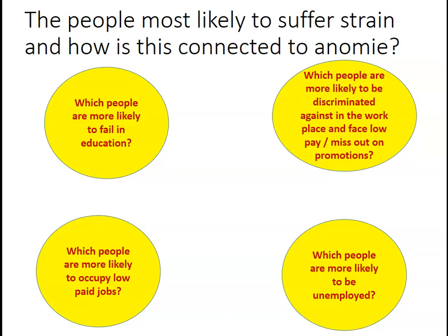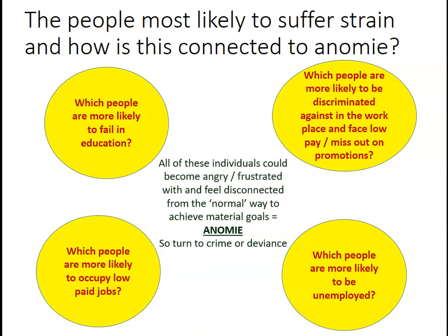Think about which groups are more likely to be unemployed, face low pay, or miss out on promotions due to discrimination. All these individuals - missing out on opportunities, being unemployed, failing in education - won't be able to achieve the material goals that everyone is telling them they should have. They see neighbors and family members achieving them but they can't, leading to anger, frustration, and feeling disconnected from the normal way to achieve material goals. This is where strain and anomie are linked, and they might turn to crime or deviant behavior.